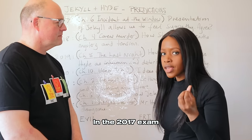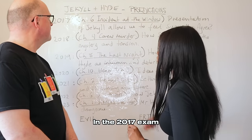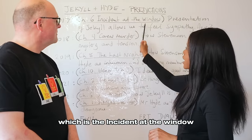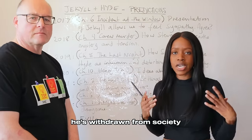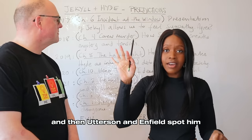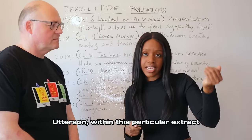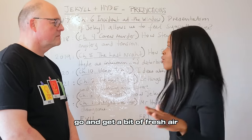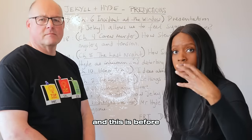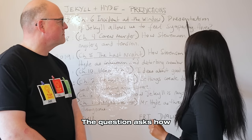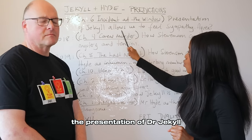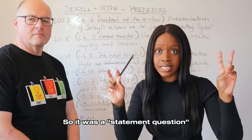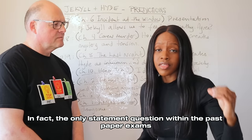Barbara takes us through from 2017. When it comes to Jekyll and Hyde, we first want to look at patterns in the 2017 exam. Students were presented with an extract from chapter six — the incident in the window — where Jekyll has withdrawn from society and Utterson and Enfield spot him. Utterson is inviting Jekyll to leave and get some fresh air. The question asks how the presentation of Dr. Jekyll allows us to feel sympathy for him as readers.